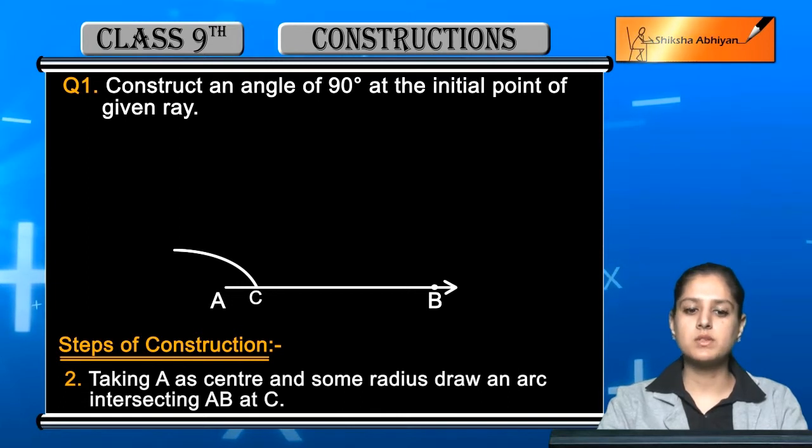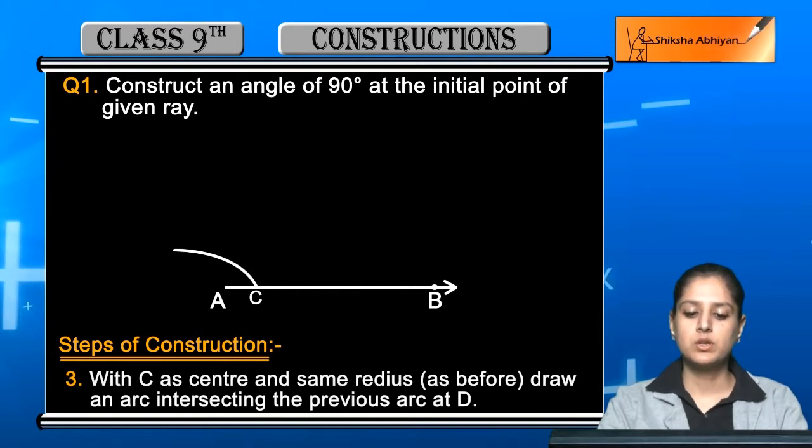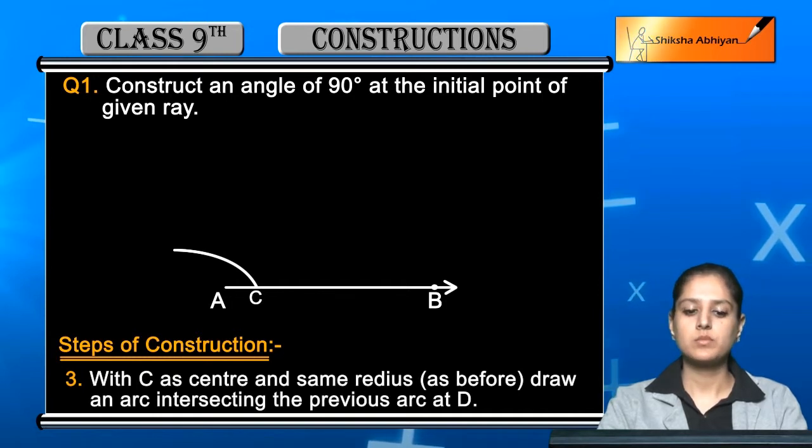Now the third step is, with C as center and same radius as before, draw an arc intersecting the previous arc at D. Next step, now the C point you have marked, AB where the arc has intersected, you will take as center.